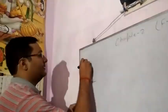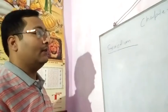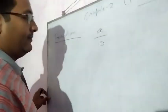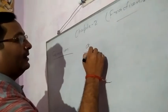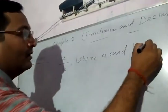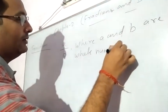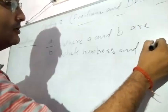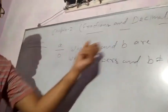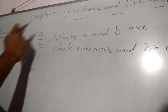First, try to understand what is a fraction. A fraction is a number in the form of A by B, where A and B are whole numbers and B is not equal to 0. Then we can say that is a fraction.